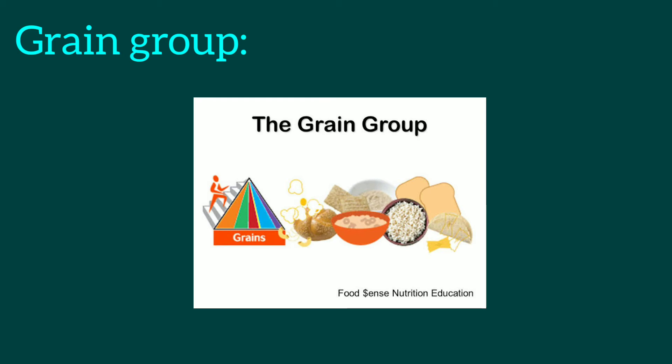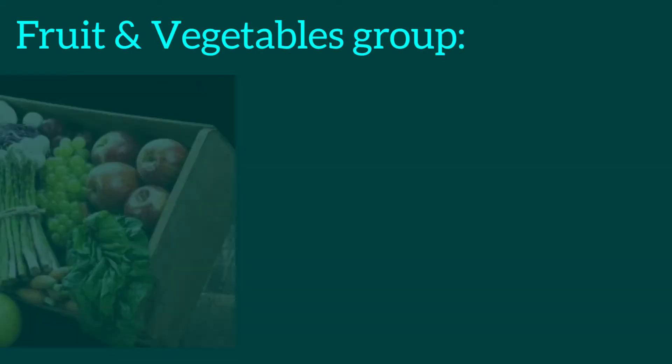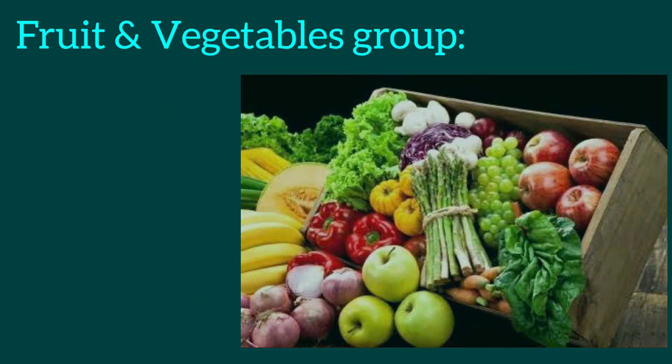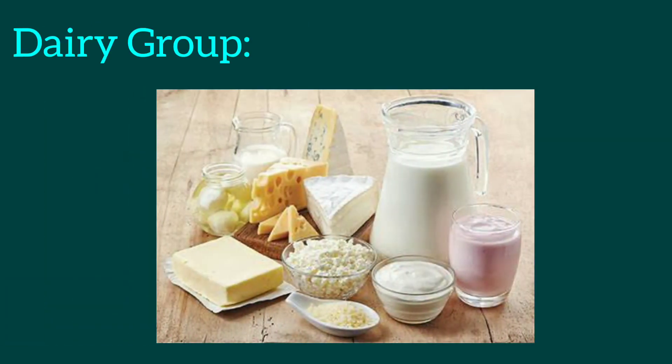Now we see the fruits and vegetable group. Fruits and vegetables are packed with vitamins, have low energy, and are a great source of minerals. Common fruits include apple, peach, and banana. Common vegetables include broccoli, carrot, and corn. Three to five servings of vegetables — for example, eat as a snack.